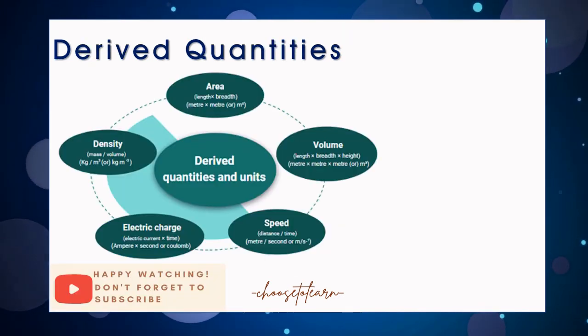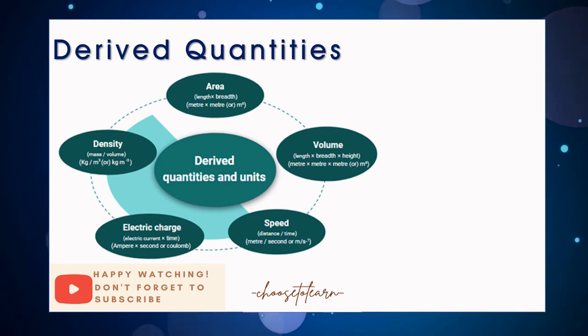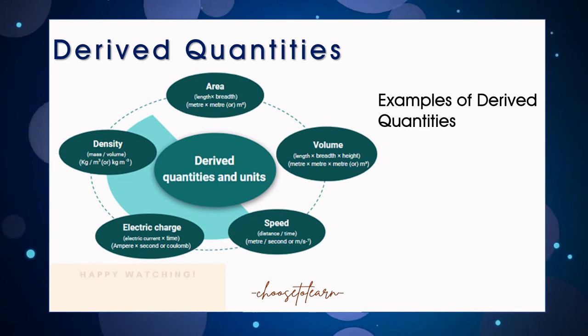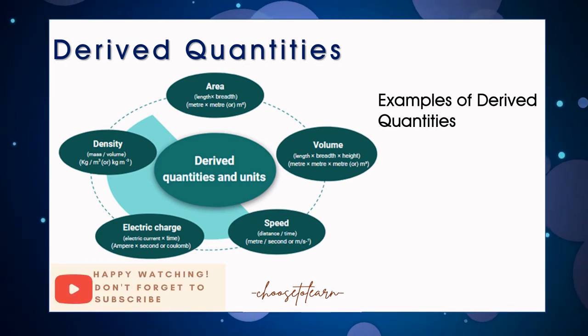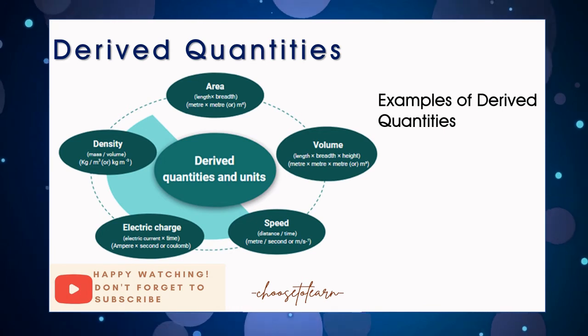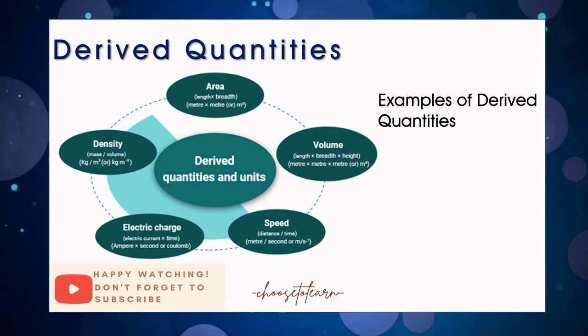For example, the speed, which make use of two fundamental quantities. These are length and time. Other examples of derived quantities are area, volume, speed, and velocity, as shown in the picture.